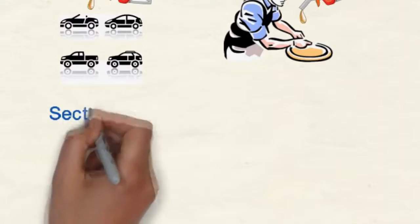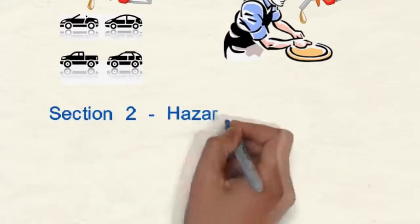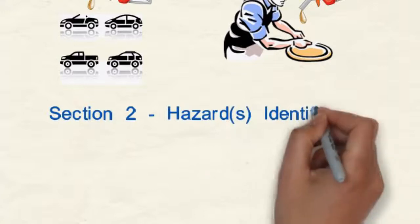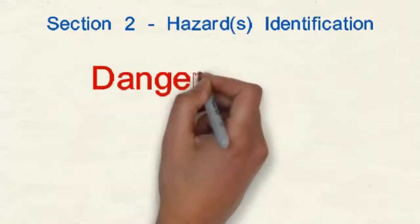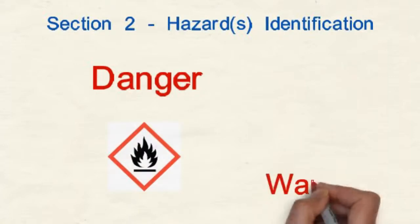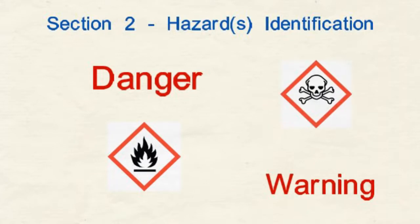How dangerous is this product? Statements like causes irreversible eye damage, highly flammable, and can cause central nervous system damage appear on safety data sheets even for seemingly harmless everyday household products. Section 2 is called hazards identification, and it is required to include all hazards regarding the chemical.